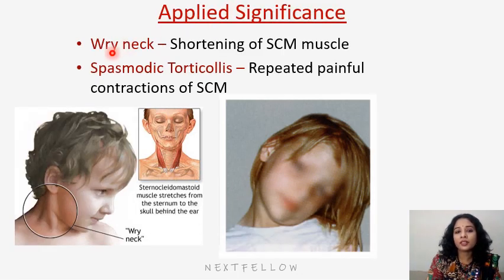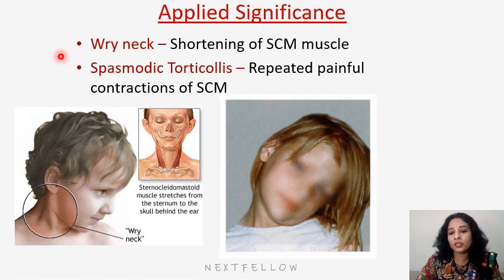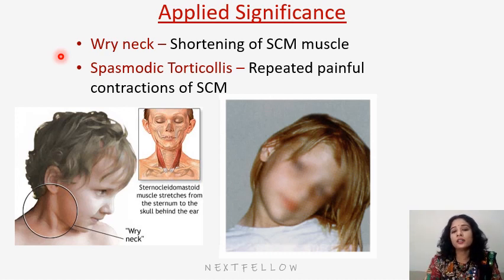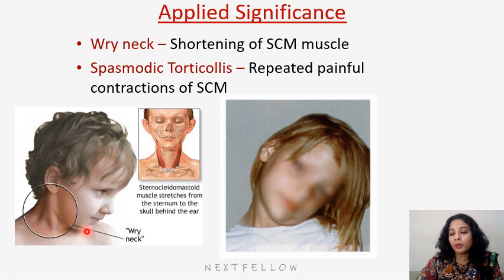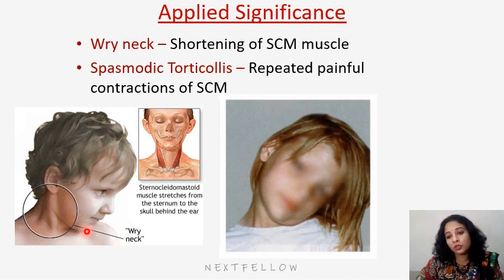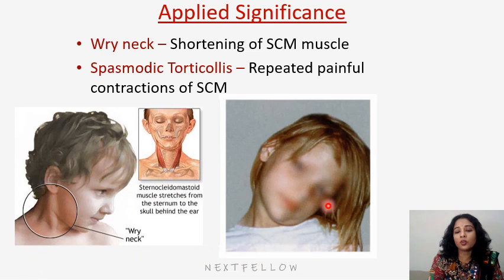Applied significance: wryneck — abnormal shortening of the sternocleidomastoid results in wryneck and spasmodic torticollis. Spasmodic torticollis is repeated painful contraction of the sternocleidomastoid resulting in bending of the neck to one side. This shortening can be congenital — a spasm of the muscle present by birth — or acquired due to pain or spasm, causing the head to bend to one side.